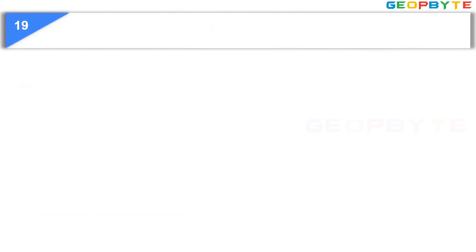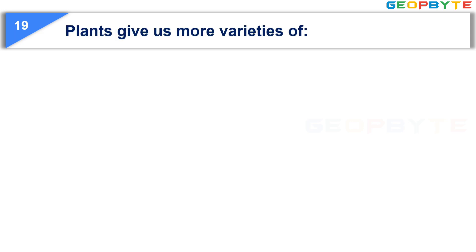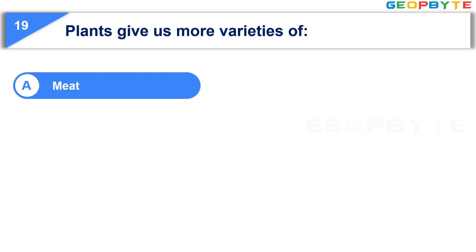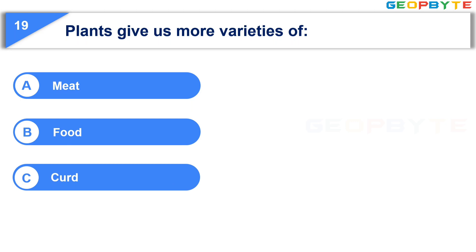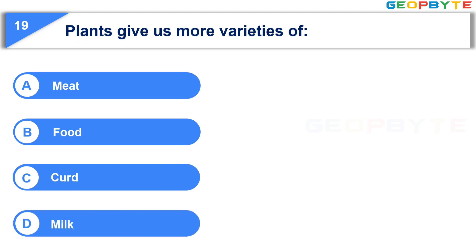The nineteenth question is: Plants give us more varieties of. Option A, Meat. Option B, Food. Option C, Cooked. Option D, Milk. Your time starts now.